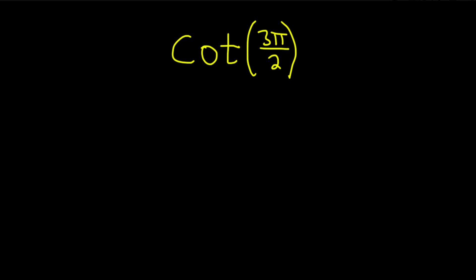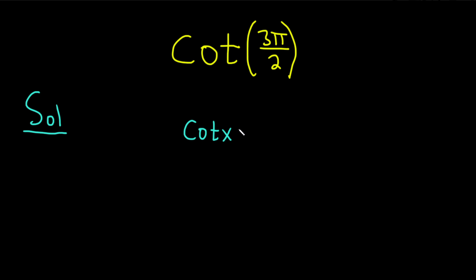Hello, in this video we're going to compute the cotangent of 3 pi over 2. The cotangent of x is equal to the cosine of x over the sine of x.